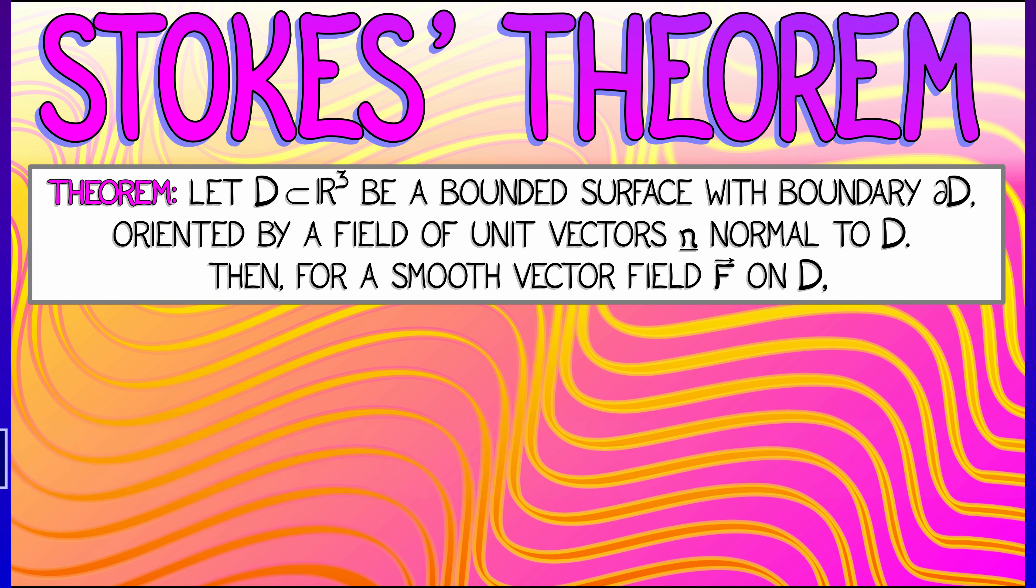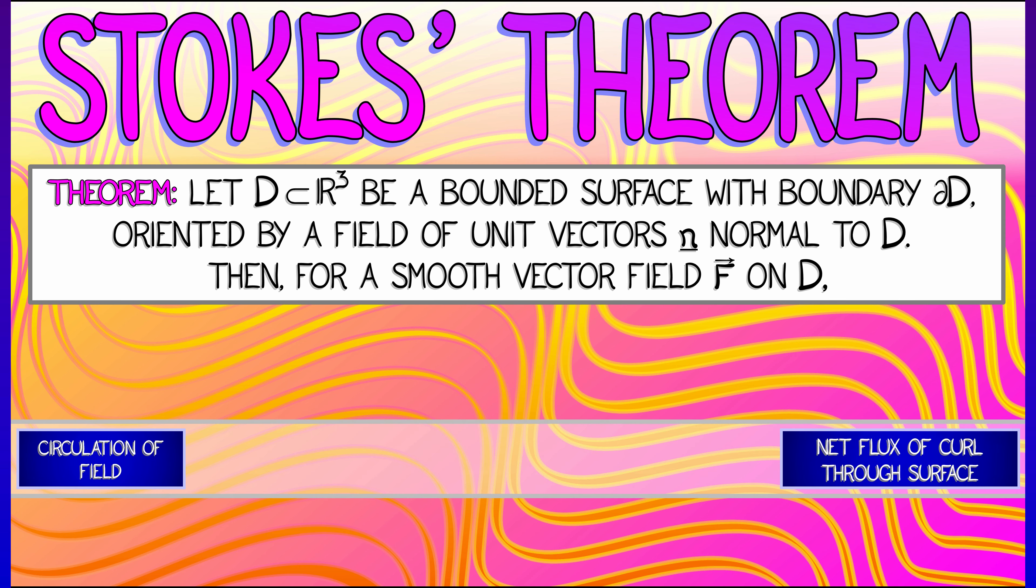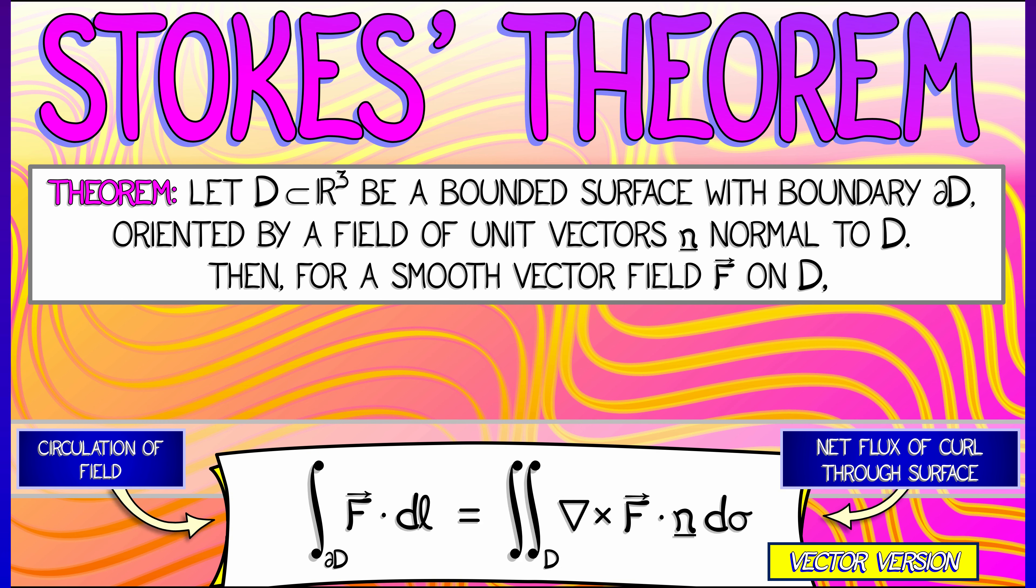Then for a smooth vector field F on D, Stokes theorem says that the circulation of F along the boundary of D is the net flux of the curl through the surface. Written out in terms of vectors, the circulation is the dot product of F with the arc length element along D, that oriented arc length element DL. On the right-hand side, we have the flux of the curl integrated with respect to the surface area element D sigma, back from when we learned surface integrals.